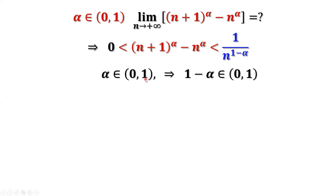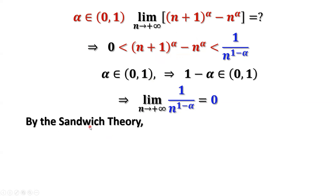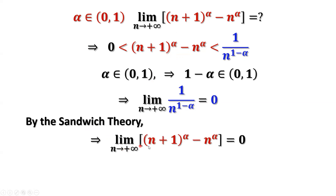Because alpha is between zero and one, one minus alpha is also between zero and one, which is positive and less than one. Therefore, the limit of one over n to the power of (one minus alpha) goes to zero as n goes to positive infinity, because one minus alpha is positive. The left-hand side is zero, the right-hand side goes to zero, so by the squeeze theorem the middle part must go to zero. The limit of (n plus one) to the power of alpha minus n to the power of alpha equals zero as n goes to positive infinity.